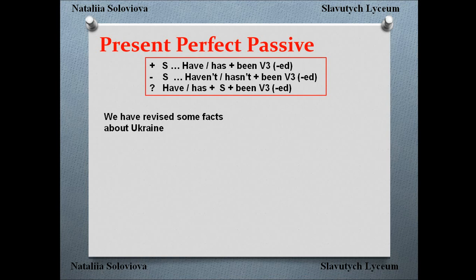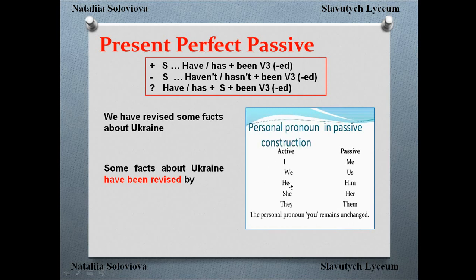Some facts about Ukraine have been revised by us. Notice that the pronoun changes: if the original subject was 'we,' the new object in the passive construction becomes 'us.' Personal pronouns must be changed when converting from active to passive voice. So: 'Some facts about Ukraine have been revised by us.'